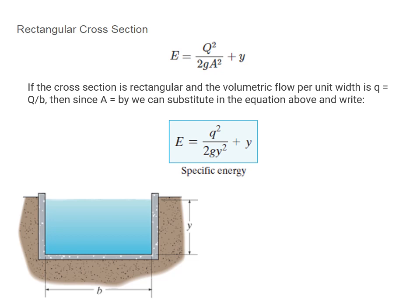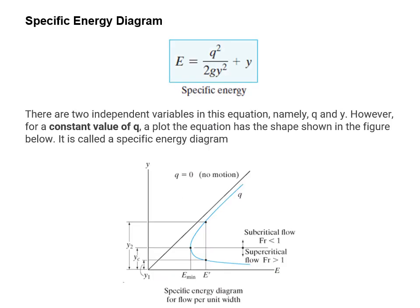For a rectangular cross section, the volumetric flow rate per unit width, small q, equals big Q divided by B, the width of the channel. Since the area of the channel is B times the depth Y, we can substitute these into the energy equation and arrive at the specific energy equation. This equation is very useful as it allows us to draw specific energy diagrams.